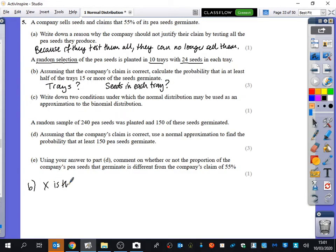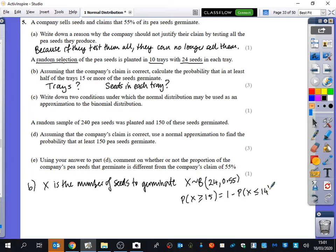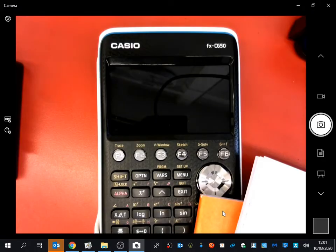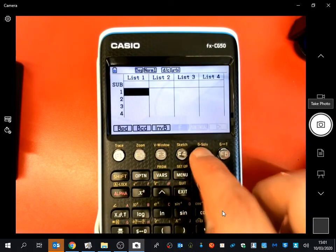So if I have a look at part B and I say that X is the number of seeds to germinate, then we could say that X is binomially distributed. And we're interested in how many seeds there are in each tray because there's 24 seeds in each tray. And I want to know that in the tray, 15 or more of the seeds germinate. So there's 24 seeds. We think that the probability of it germinating is 0.55. And I want to find the probability that at least 15 or more of the seeds germinate. So that's the probability that X is greater than or equal to 15, which is one minus the probability that X is less than or equal to 14. So I'm going to just go to the calculator and I'm going to work that out here.